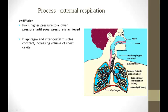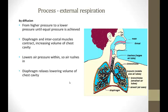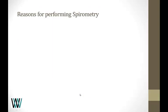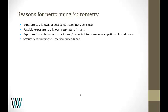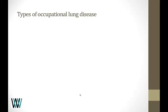The diaphragm flattens and makes the chest area larger, increasing the volume of the chest cavity and reducing the pressure in the lungs, so air rushes in from outside. Then the diaphragm relaxes, lowering the volume and the air rushes out. So why do we do spirometry? In the workplace it's mainly to do with respiratory sensitizers, but it can also be used for welfare issues such as smoking and as an aid to health promotion.